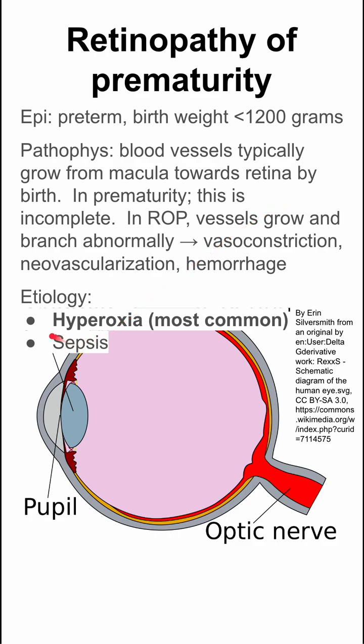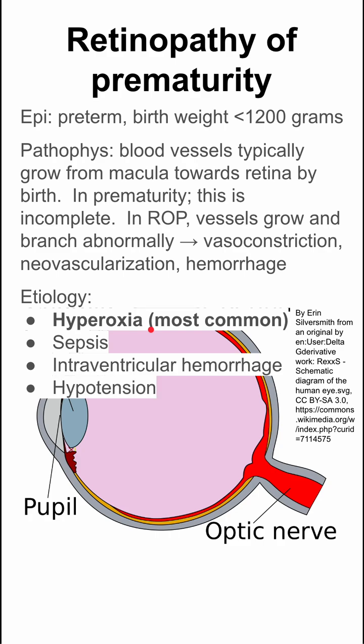Hyperoxia is the most common cause of retinopathy of prematurity. It has also been linked to sepsis, intraventricular hemorrhage, hypotension, and hypoxemia.